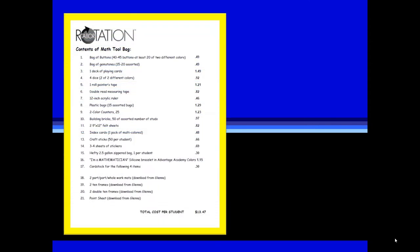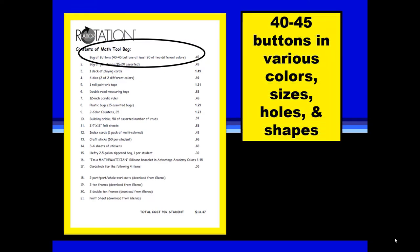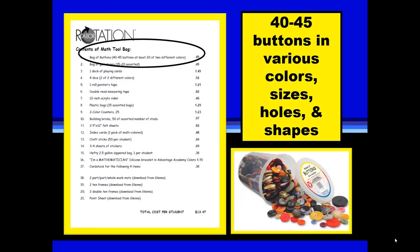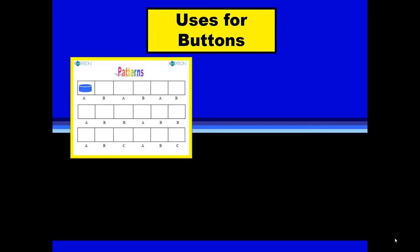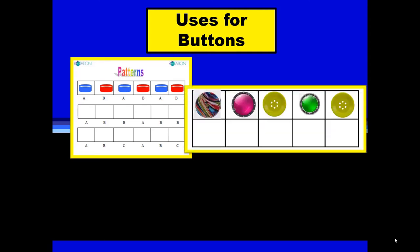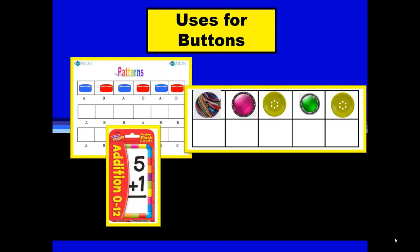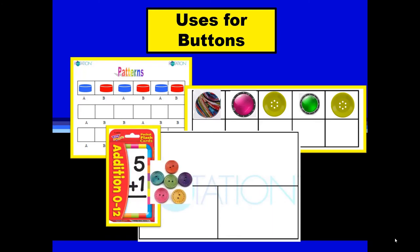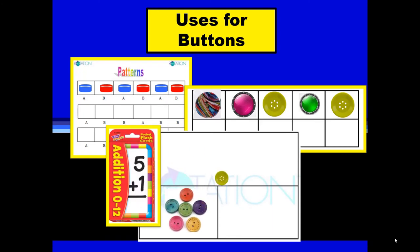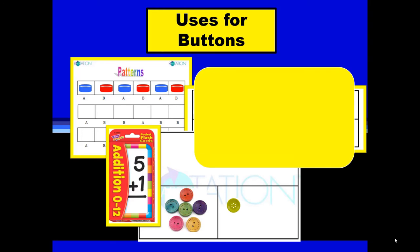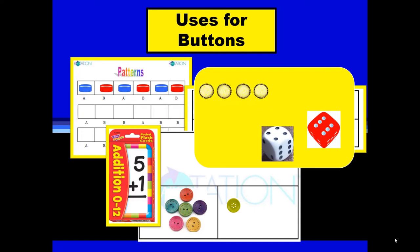The first suggested tool is popular with students from kindergarten to high school — it's a bag of buttons, 40 to 45 of them in various colors, sizes, holes, and shapes. The uses for buttons are many: you can find a pattern, create the number 5 on a 10-frame, have a concrete illustration of an abstract number sentence on a part-part-whole map, and even use buttons of two different colors for positive and negative integers.